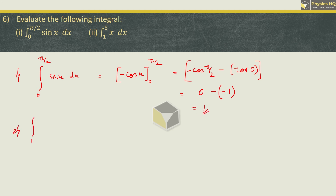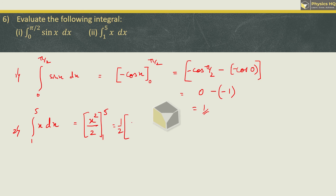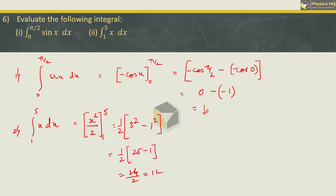Next we need to find the integral of x. The integral of x gives x squared upon 2. Again the sum is not done — we need to put the limits. Taking 1 by 2 out as a constant, first put the upper limit 5 in place of x giving 5 squared, then subtract the lower limit 1 squared. So we get 1 by 2 times 25 minus 1, which is 1 by 2 times 24 equals 12.